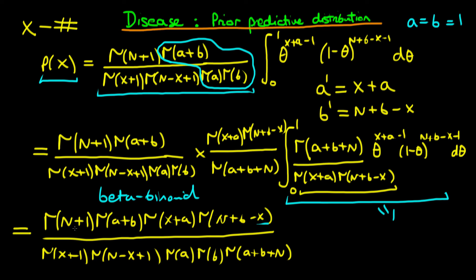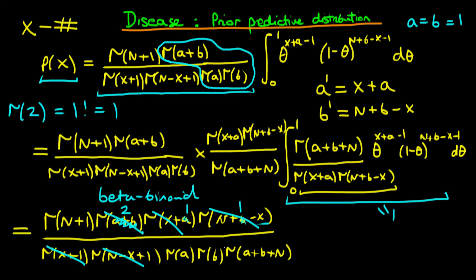So let's now think about the case when a equals b equals one — in other words, we have a uniform prior, which is what happens when we put a and b equal to one into our beta prior density. Let's look at what the prior predictive distribution looks like in this circumstance, because we can simplify this a lot. In the numerator, a plus b just becomes gamma of two. We know that gamma of two is just the same as one factorial, which is just one, so that disappears. We know also that gamma of x plus a is now gamma of x plus one, because a is one, which cancels with this term on the denominator. In the next term on the numerator, we've got gamma of n plus one minus x, which is just the same as that on the denominator, so it cancels again. Finally, if we look at the denominator, we've got gamma of a times gamma of b, and a and b are both one. So gamma of one is defined to be zero factorial, and we know that zero factorial is defined to be one, so in both of these cases they just disappear.